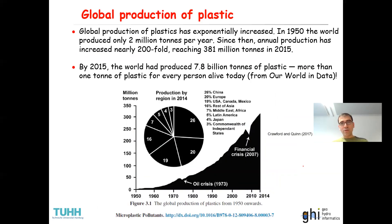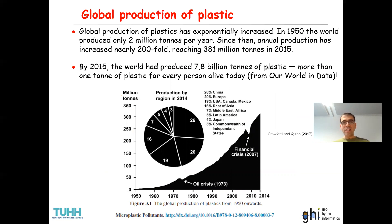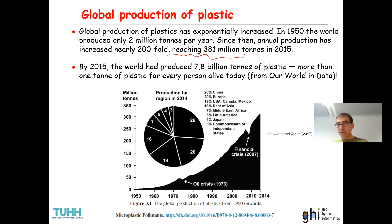I'd like to start my lecture by showing this figure, which provides a very good picture of the annual production of plastic on a global scale. The y-axis is million tons of plastic produced and the x-axis is the year. As you can see, in 1950 we were producing about 2 million tons of plastic per year. But by 2015, we reached roughly 381 million tons of plastic per year.